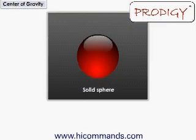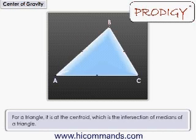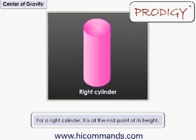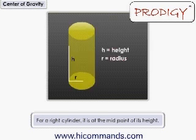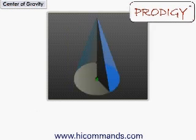Let us look at the center of gravity of a few regular objects. For a solid sphere, it is at the center of the sphere. For a triangle, it is at the centroid, which is the intersection of medians of the triangle. For a right cylinder, it is at the midpoint of its height. For a right solid circular cone, it is at a distance h/4 from the base, where h is the height of the cone.